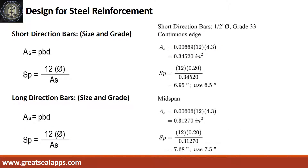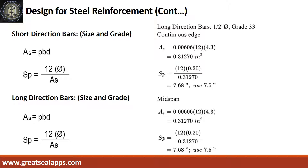At short direction, given continuous edge rho equals 0.00669, b equals 12, d equals 4.3. Area of steel is 0.3452 square inches, spacing for half-inch diameter bar is 6.5 inches on center. At long direction, given continuous edge and mid-span rho equals 0.00606, b equals 12, d equals 4.3. Area of steel is 0.3127 square inches, spacing for half-inch diameter bar is 7.5 inches on center.